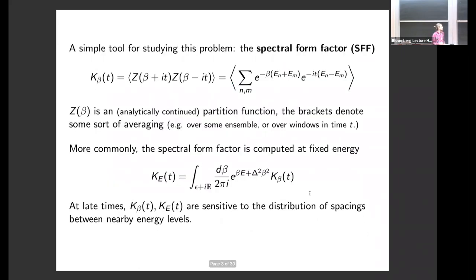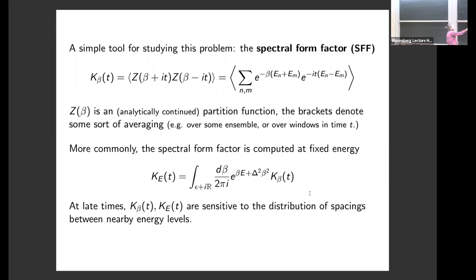While AdS/CFT tells us they have a huge spectrum, we want to understand this from a bulk point of view. Our main tool will be the spectral form factor. We have two versions: one corresponds to fixed temperature k_beta, defined as a product of the partition function analytically continued from beta to beta plus it, taking the modulus squared, and then doing some sort of averaging. The averaging can depend on the system — ensemble average or time average over a small window.